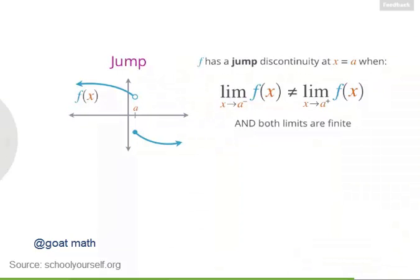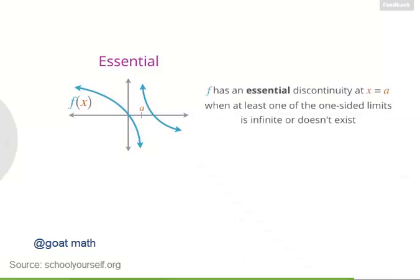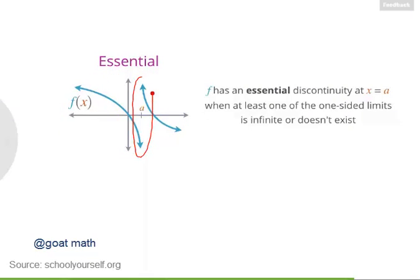Also, at jump discontinuities, both of these limits must be finite, meaning they don't go off to infinity. The last type of discontinuity is called an essential discontinuity — that's when at least one of the one-sided limits is infinite or doesn't exist. This function has an essential discontinuity at x equals a where it has a vertical asymptote. The left limit is going to negative infinity and the right limit is going to positive infinity.